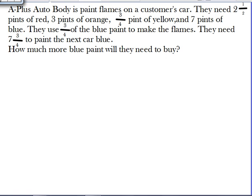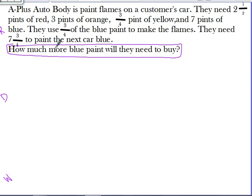First thing I'm going to do is set up my RDW: Read, draw, write. Then I'm going to read this a second time. In this one it's a little bit tricky because they're giving you some extra information. So the first thing I want to do is box the question. How much more blue paint will they need to buy?